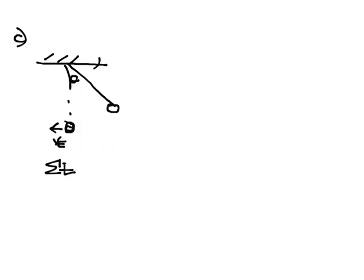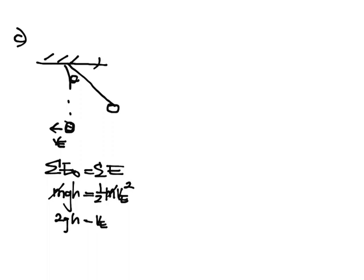So I have ΣE₀ equals ΣE, and I have at the beginning just gravitational potential. So I have mgh equals 1/2 mve². Okay, and I can solve for ve. Of course my m's go away. I can multiply both sides by 2. And I have 2gh equals ve². And I can take the square root of both sides. And I have ve is the square root of 2gh.